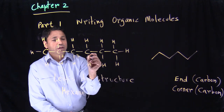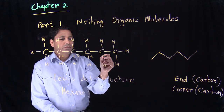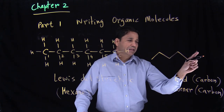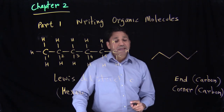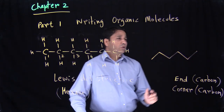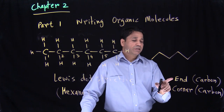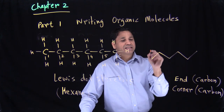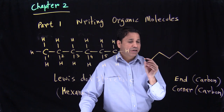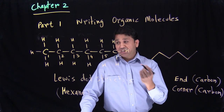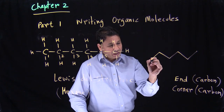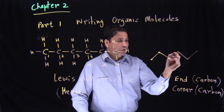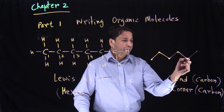If I want to number those carbons, I can number them: one, two, three, four, five, and six. Now in this case, we don't write down carbons and hydrogens. We don't show carbon as carbon and hydrogen as hydrogen. Instead, we assume that each end is a carbon and each corner is a carbon.